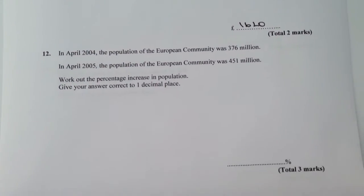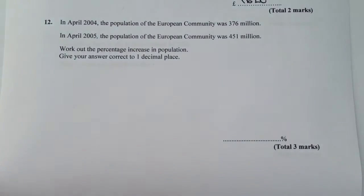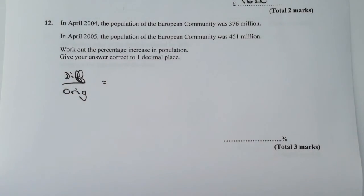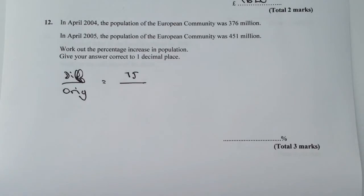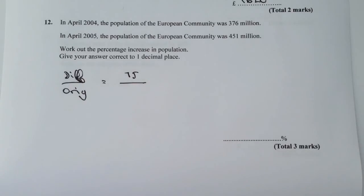On to question 12. This is a little bit more involved and they might try to throw you by using words like 'million.' The population of the European community was 376 million in 2004. In 2005 it had gone up to 451 million. Percentage increase again — difference over original. The difference between 376 million and 451 million is 75 million. I'm just going to leave it at 75 because using the same units top and bottom, it won't make any difference to the calculation.